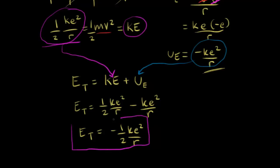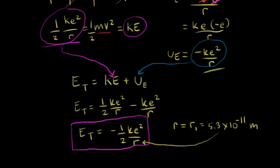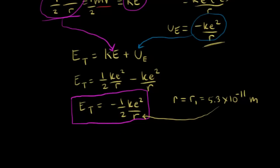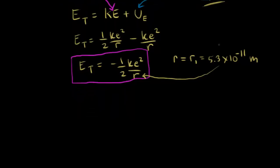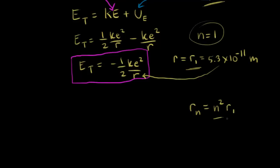Let's find the total energy when the radius equals R1 — the radius of the electron in the ground state. R1, from the math in the last video, is 5.3 times 10 to the negative 11 meters. We got R1 by setting n equal to 1 in our equation that the radius for any integer n is equal to n squared times R1.